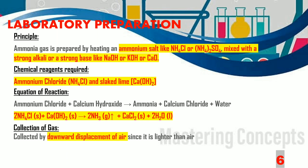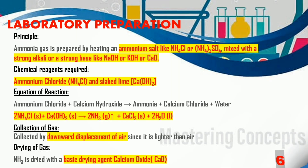Since ammonia gas is lighter than air, it is collected by downward displacement of air. The gas is dried using a basic drying agent, calcium oxide (CaO).